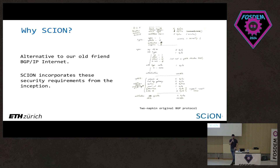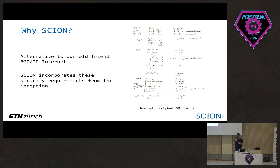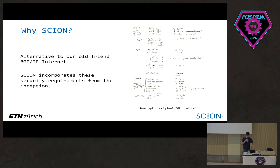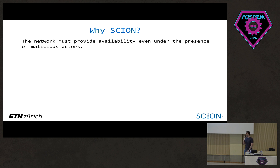The second question is: why does SCION even exist? SCION comes as an alternative to our old friend, BGP IP internet. This was created even before I was born, so imagine how things have changed. SCION has the distinct aspect that it incorporates security from the very inception. We need a network that provides availability even under the presence of malicious actors, because there are people interested in harming inter-domain routing.